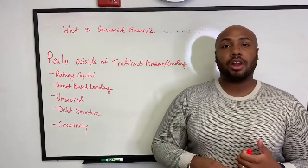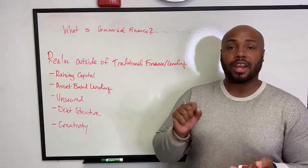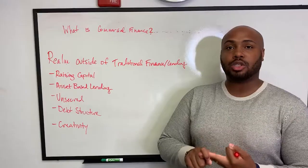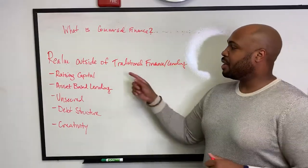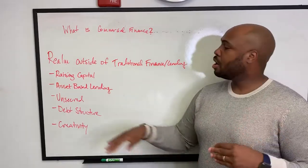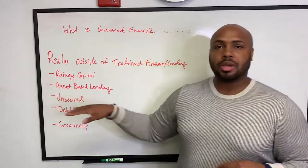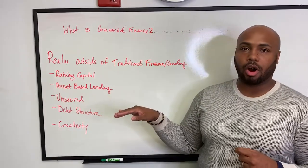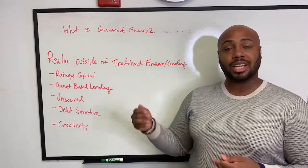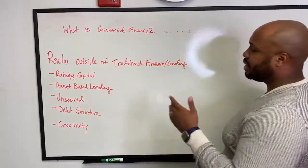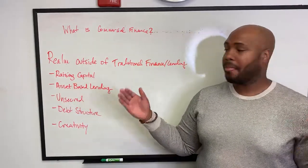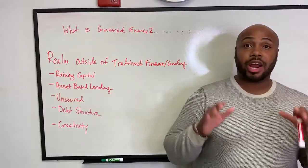In traditional financing, they typically underwrite the borrower, underwrite the asset, and in some cases may even underwrite the insurance wrapped within the loan. What that means is: if the asset is good but the borrower is bad, no deal. With commercial financing, as long as the asset is good and either producing income or has the potential to produce income in the future, that's generally acceptable. The deal is a-okay.